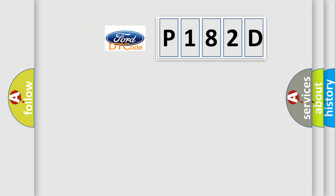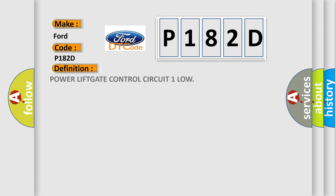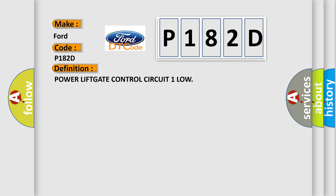So, what does the diagnostic trouble code P182D interpret specifically for Infiniti car manufacturers? The basic definition is: Power Liftgate Control Circuit 1 Low. And now here is a short description of this DTC code.